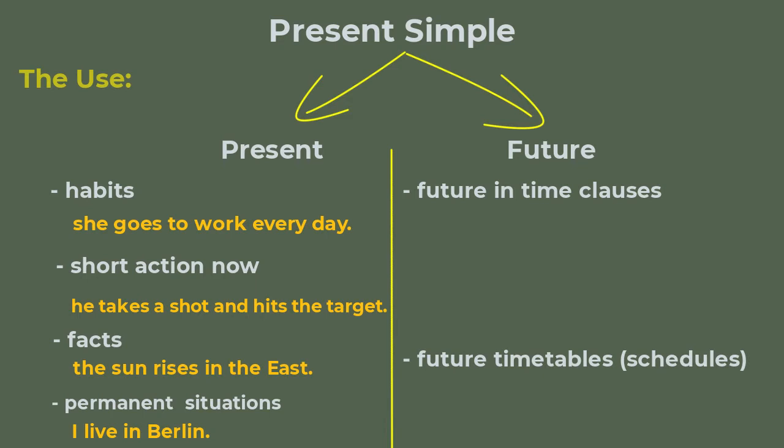Like schedules for example. On the one hand the future time clauses tell us when an event will happen. However in order for the future event to happen the future event must happen first. For example, I won't go out until it stops raining or when the sun comes out we will play soccer.